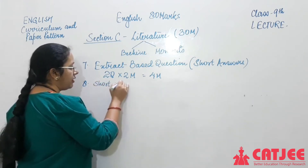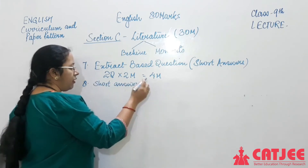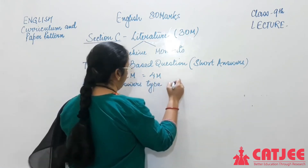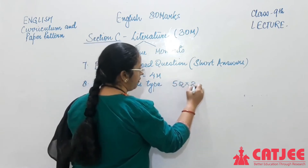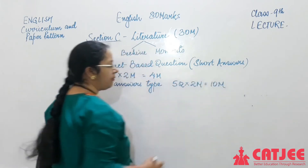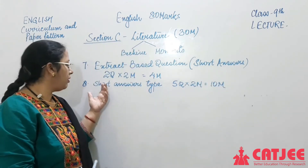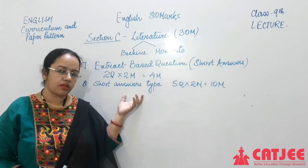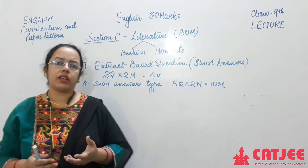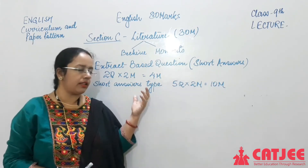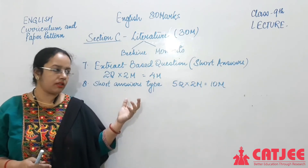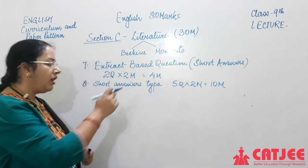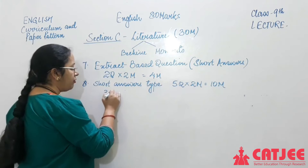Question 8 is Short Answer Type. Here you have 5 questions of 2 marks each, amounting to 10 marks. This 10-mark question has short answers in the traditional question-answer format. Out of the 5 questions, 3 will be from Beehive and 2 from Moments. The number of questions given will be more, and you choose to answer 5 in total.